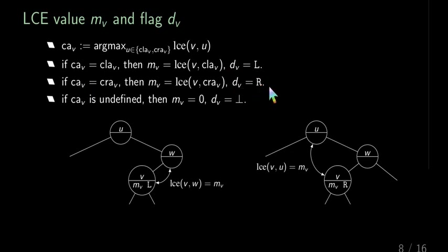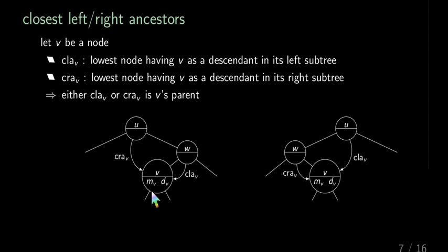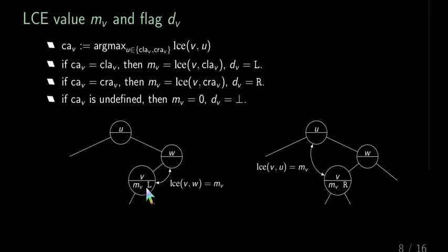In the case that the flag is L, this means that we compare with the clay, which is in this case W. So we know that the LCE between V and W is stored in the node with MV. And this is the symmetric case for R, where the LCE is now stored for the node U.